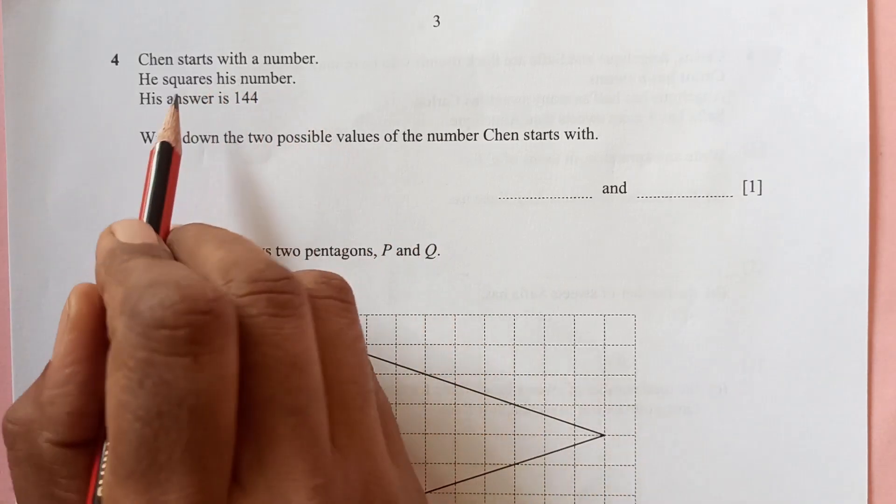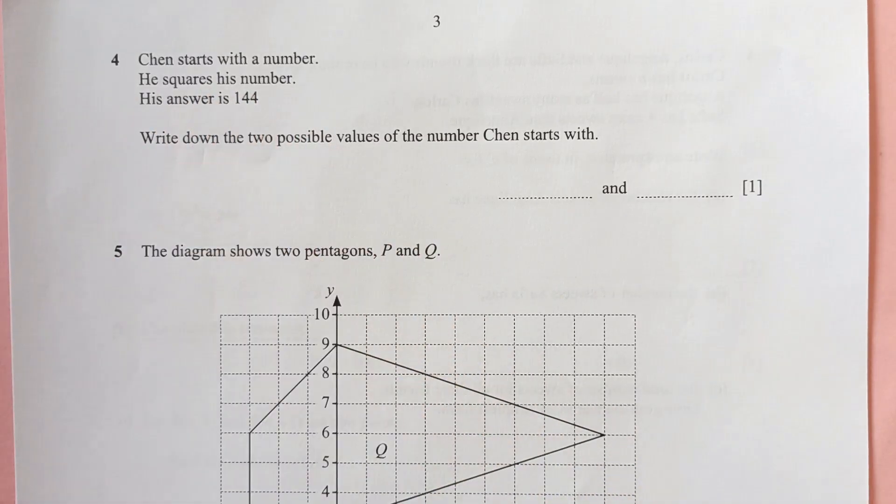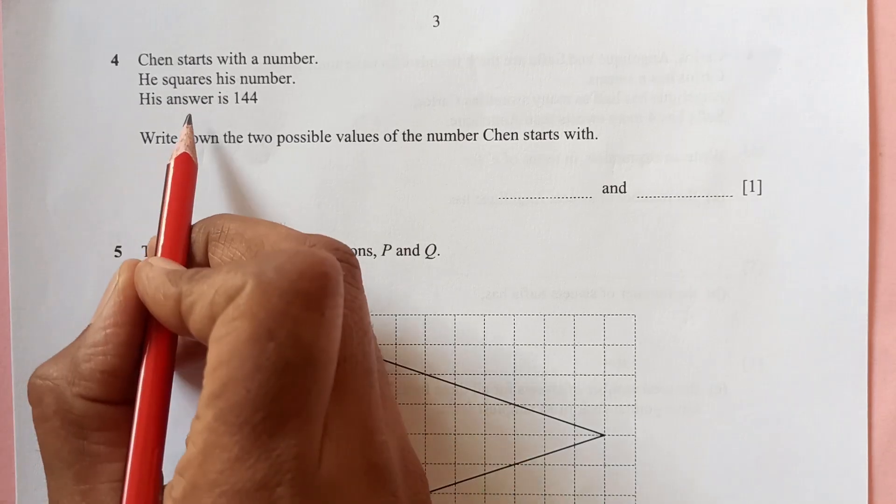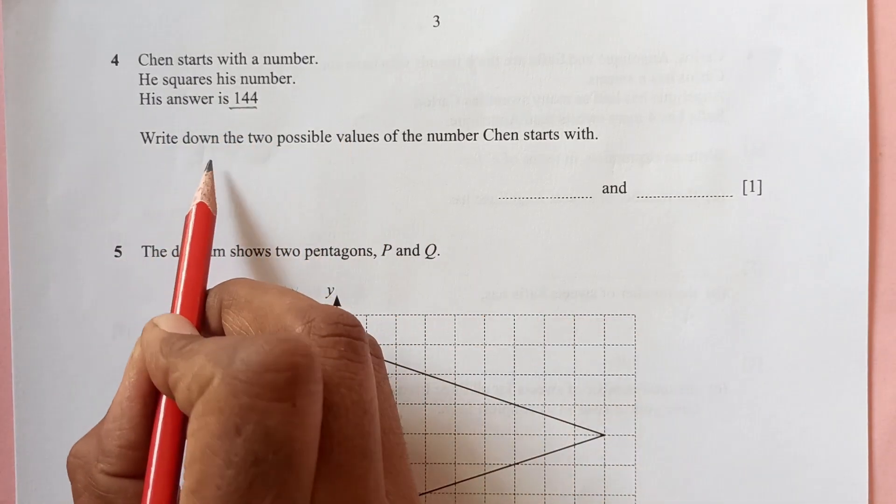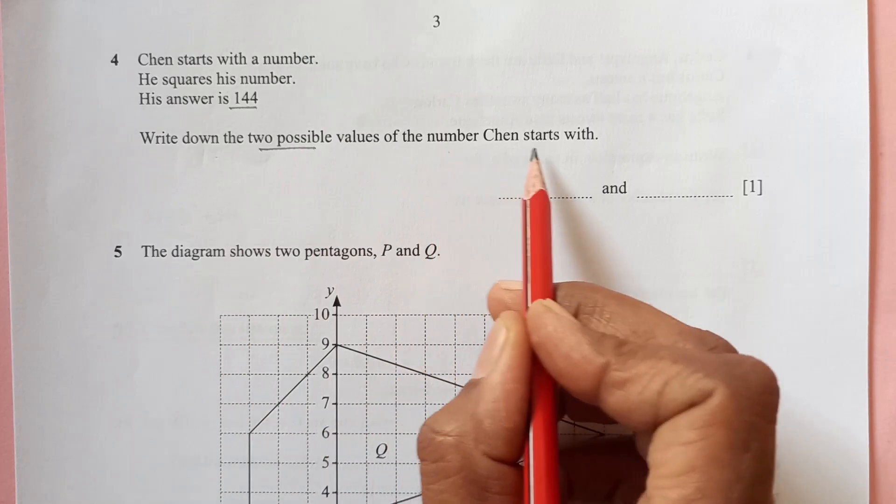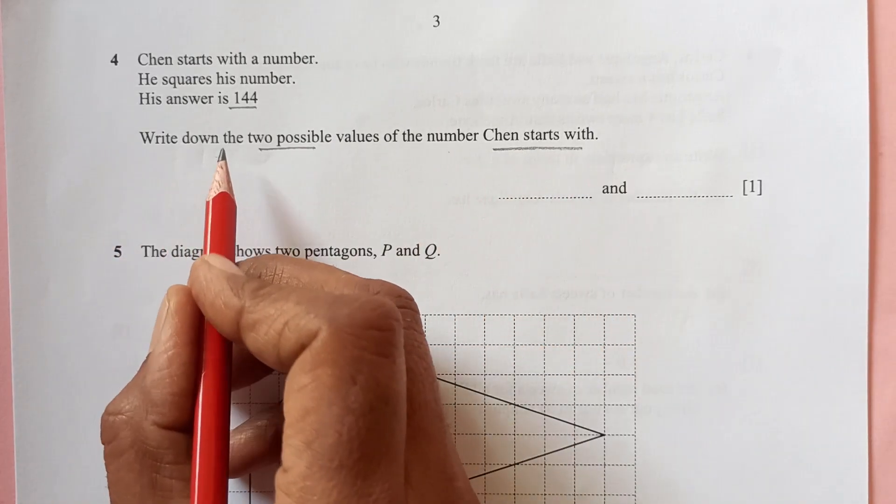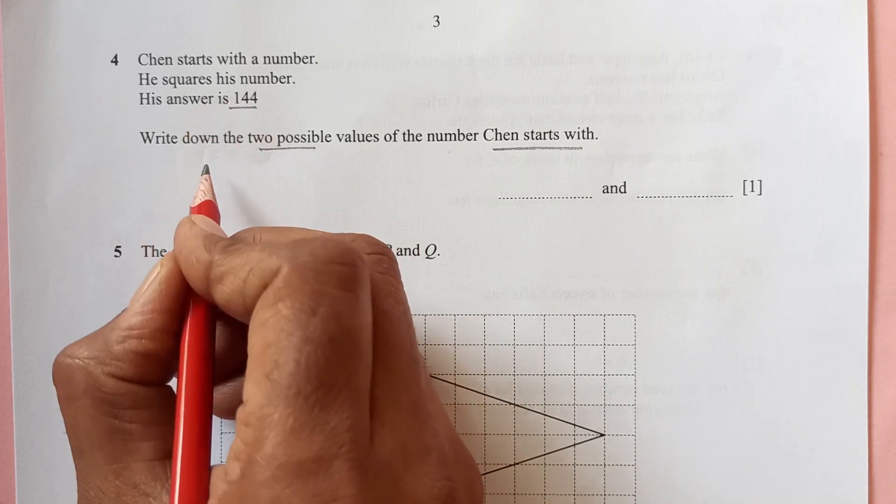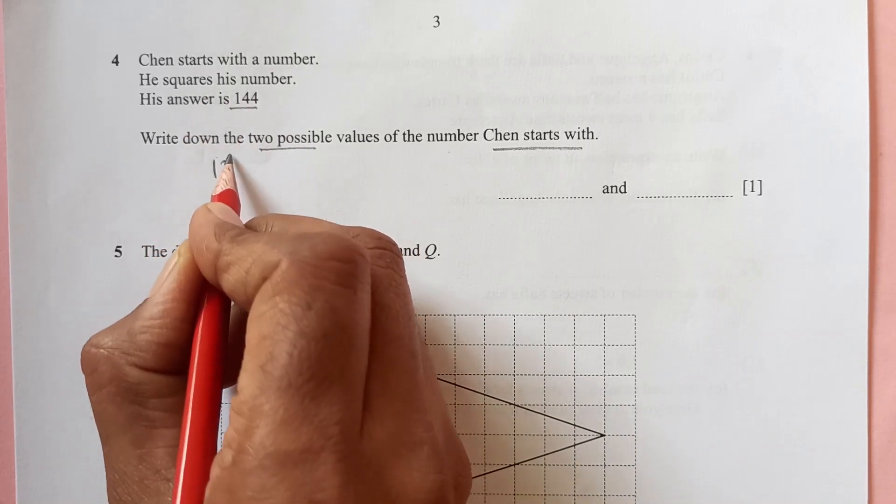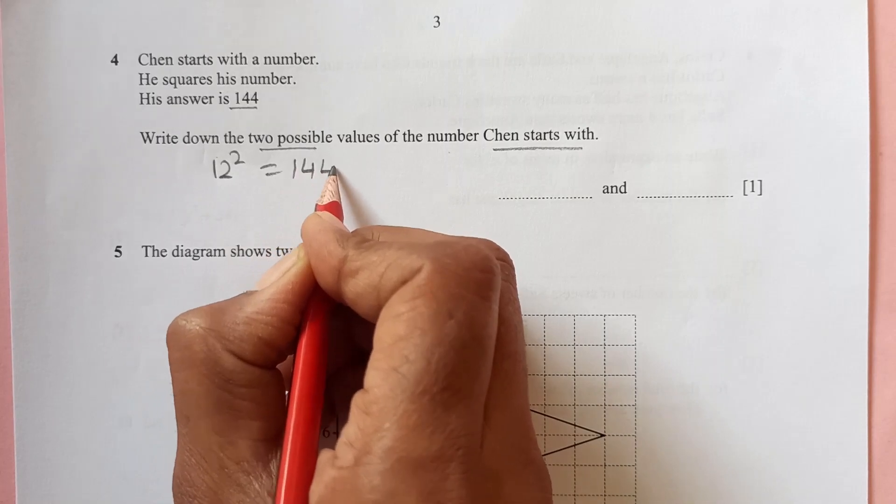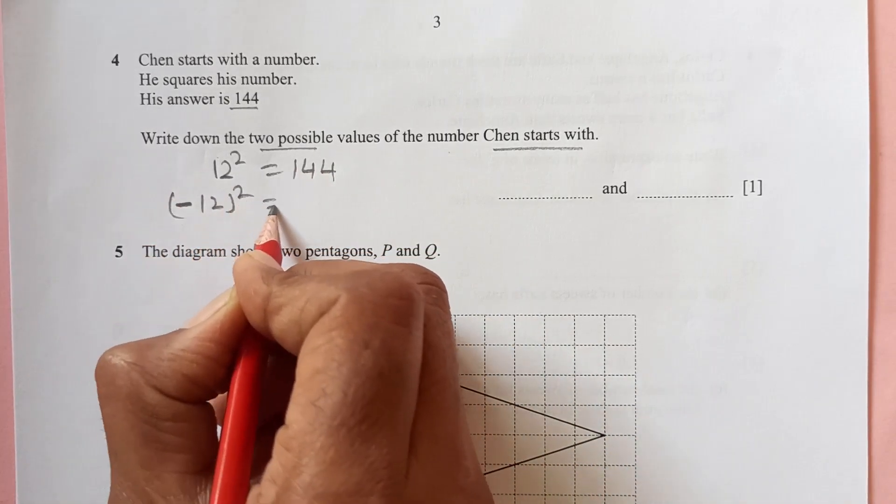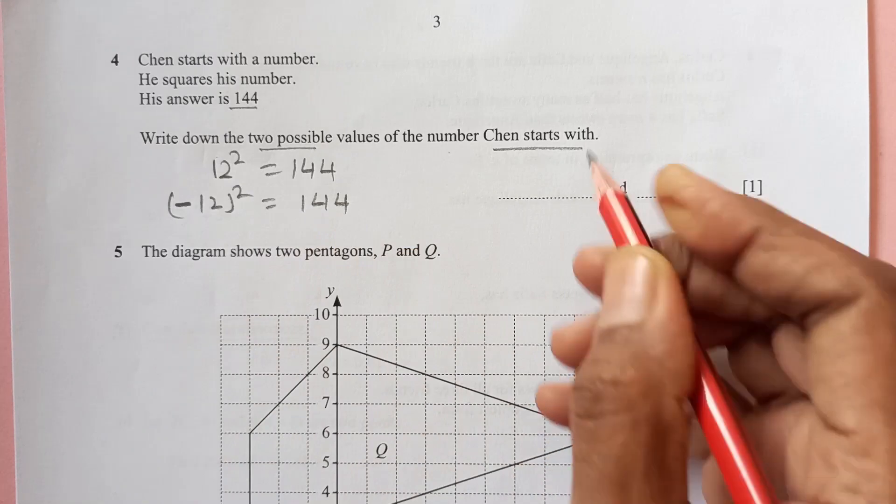Chen starts with a number, he squares this number. His answer is 144. Write down the two possible values Chen starts with. You see, he squares the number, so the square of 12 is 144 and the square of negative 12 is also 144, so his answer is going to be 12 and minus 12.